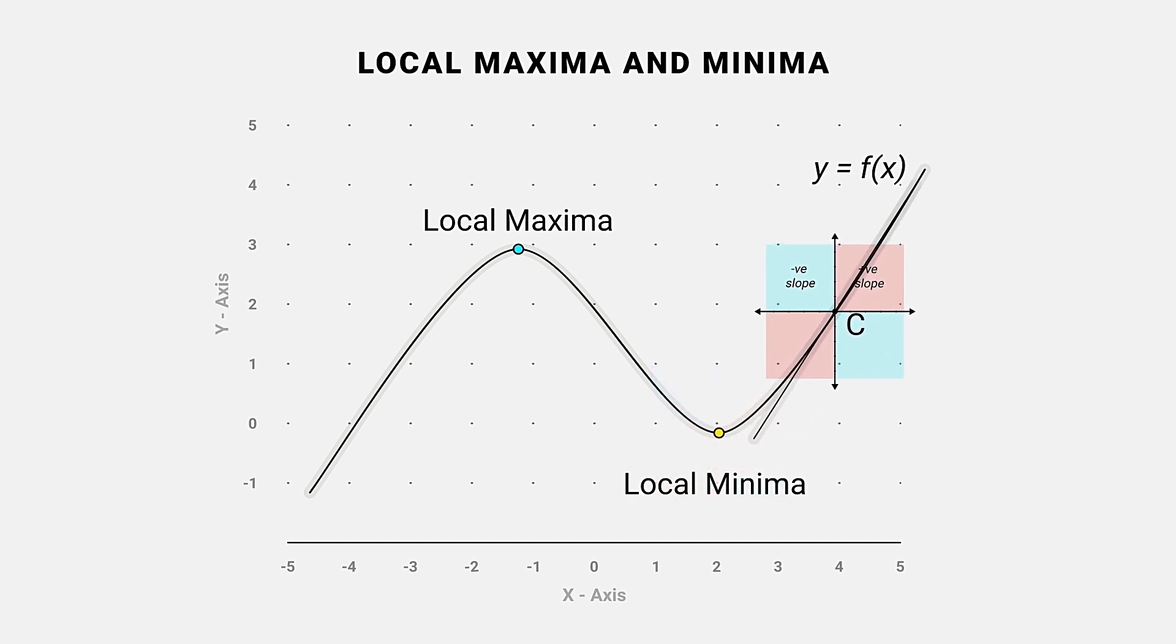If the slope of the function does not change the sign at c, then f of x has no local extreme value at c.